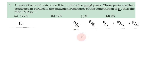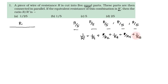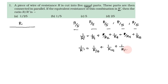For a parallel connection, 1 by R' equals the sum of reciprocals. We have 5 resistors each of value R/5, so 1 by R' equals 1 by (R/5) plus 1 by (R/5) plus 1 by (R/5) plus 1 by (R/5) plus 1 by (R/5). Each reciprocal gives 5 by R.